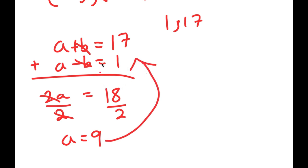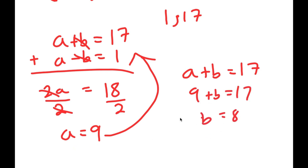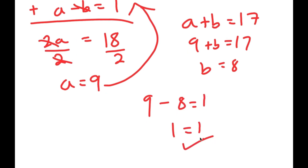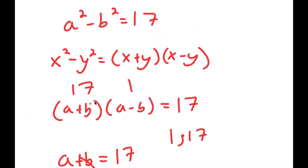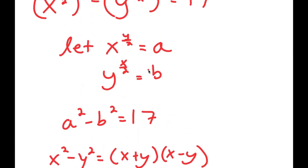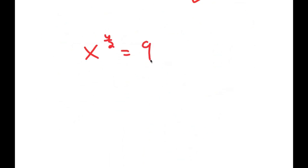Now I can plug a equals 9 back in. Using a plus b equals 17: 9 plus b equals 17, meaning b equals 8. So a equals 9 and b equals 8. We can check: a minus b is 9 minus 8 equals 1. Now recalling that x to the power of y over 2 equals a equals 9, and y to the power of x over 2 equals b equals 8.